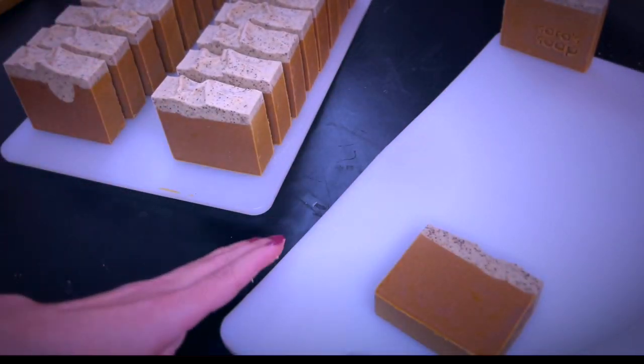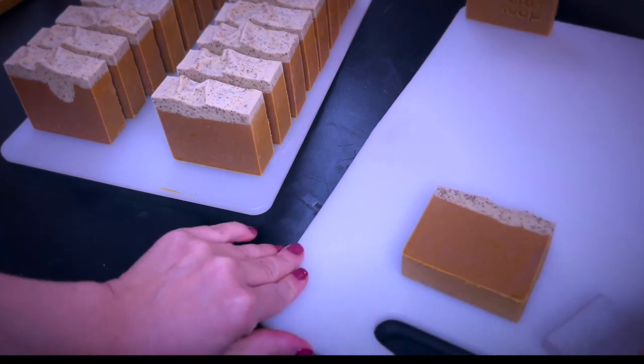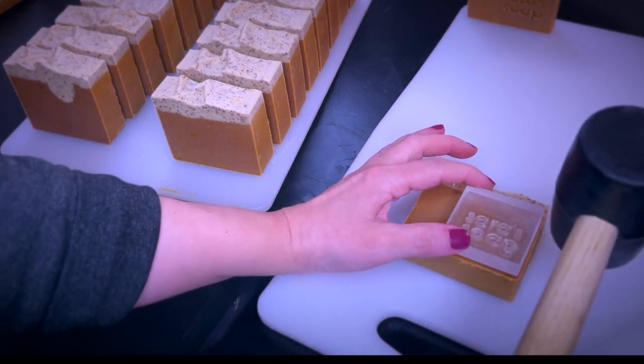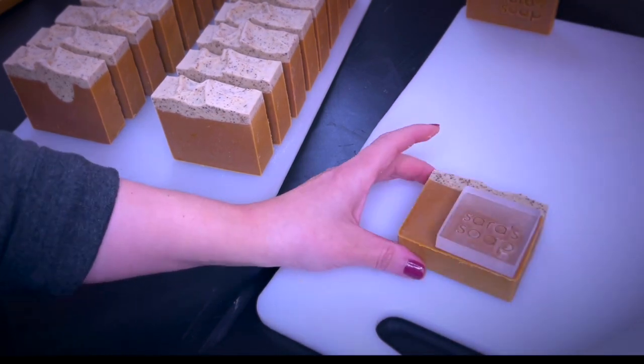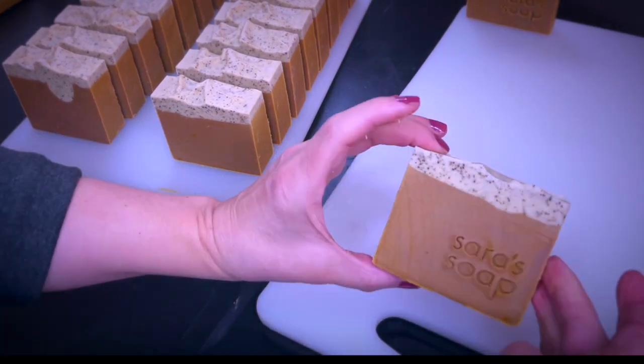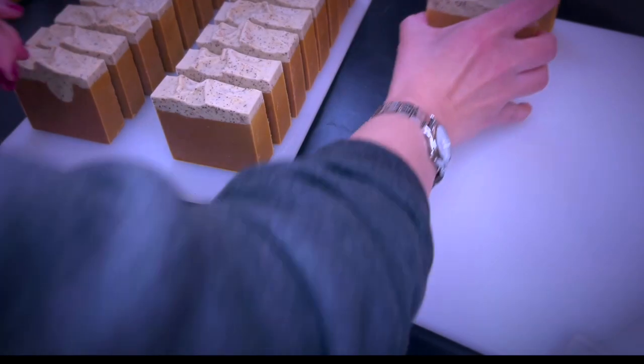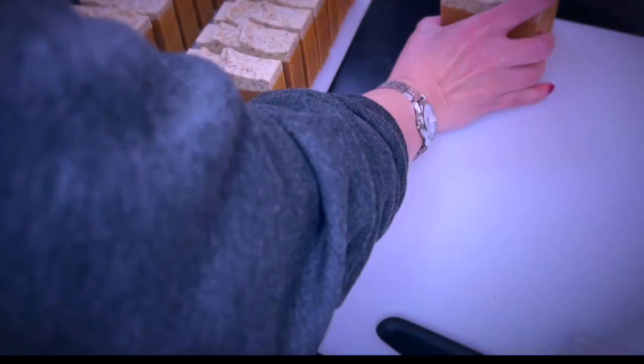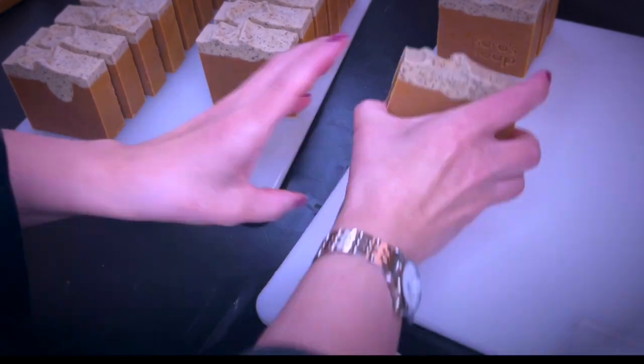I like to place the stamp on the desired place on my soap and then just give it a light tap with the rubber mallet until I see that the stamp sinked into the soap and then I just wiggle it out gently. Once you get used to it it goes very fast and I think it gives a soap a cool finish in my opinion.